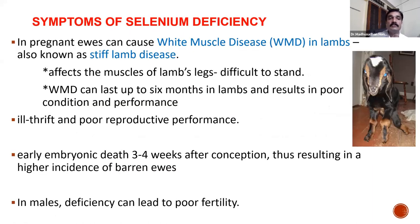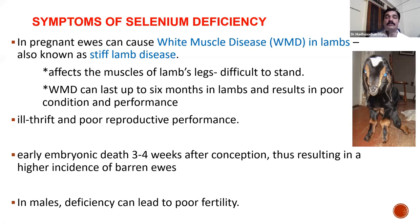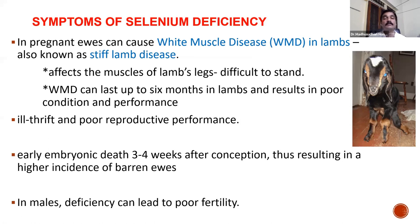A very important symptom of selenium deficiency is white muscle disease in lambs, also known as stiff lamb disease. It affects the muscles of the lamb's legs, leading to difficulty standing. White muscle disease can last up to six months and results in poor condition and performance. There will be growth failure, poor reproductive performance, and early embryonic death at three to four weeks after conception, resulting in higher incidences of barren ewes. In males, deficiency can lead to poor fertility.